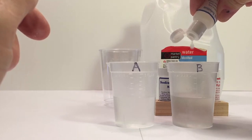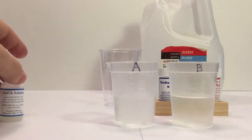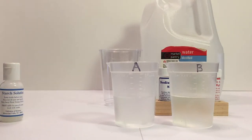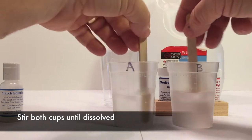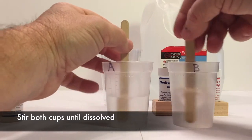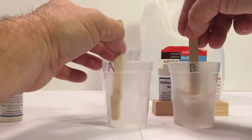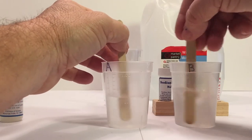And then we are going to stir both cups very well. Now we're going to stir these up with popsicle sticks. You've got to make sure that all the chemicals are completely stirred up. You don't want any of the chemicals still in the bottom. So stir those very well.